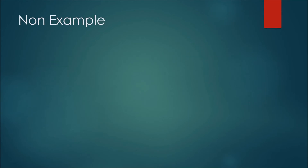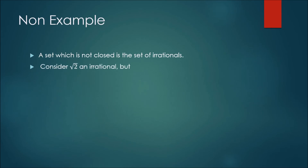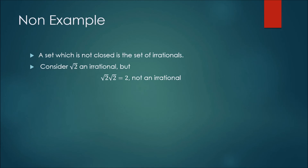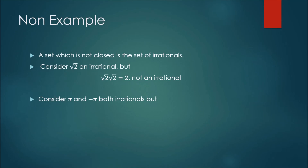A set which is not closed is the set of irrational numbers. It might seem that adding or multiplying two irrationals should give an irrational, but that's not the case. Consider the square root of two: multiplying √2 times √2 gives two, which is not irrational. Similarly, the irrationals π and −π add to zero, which is also not irrational. Thus the irrational numbers are not closed.